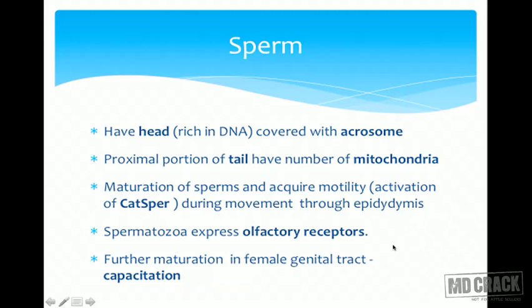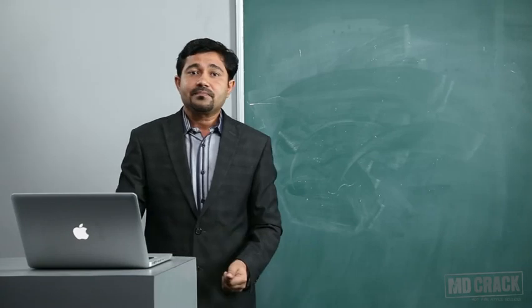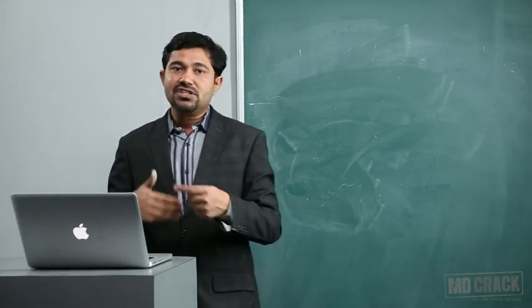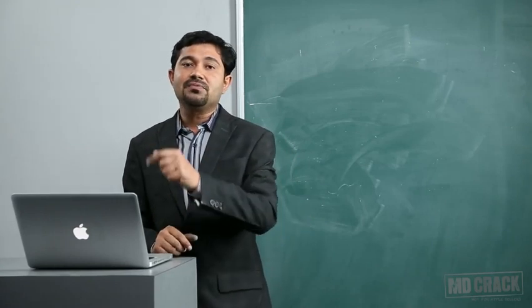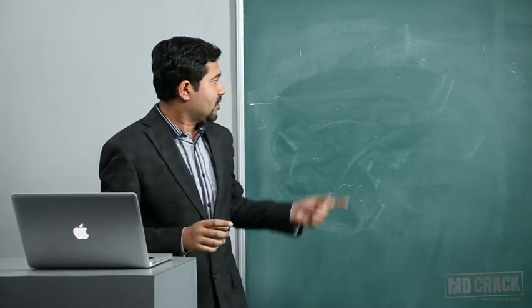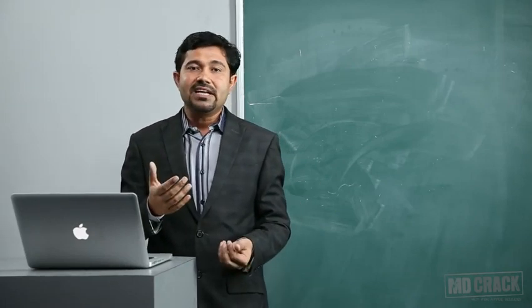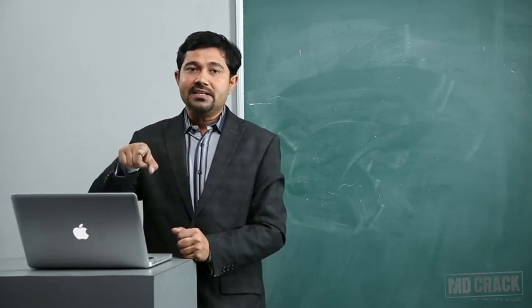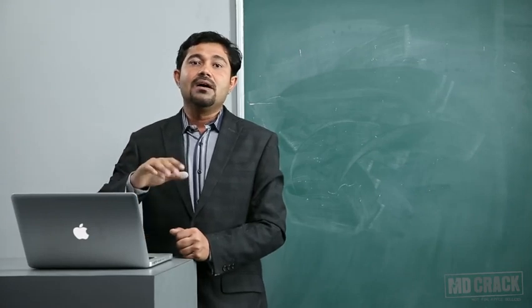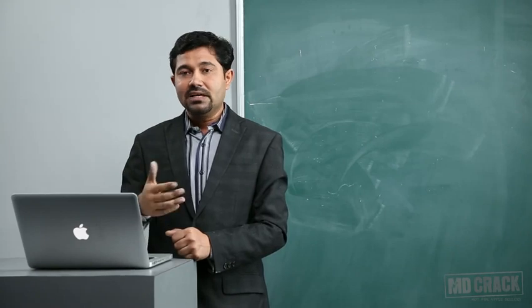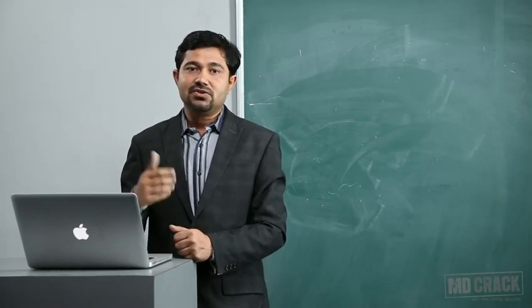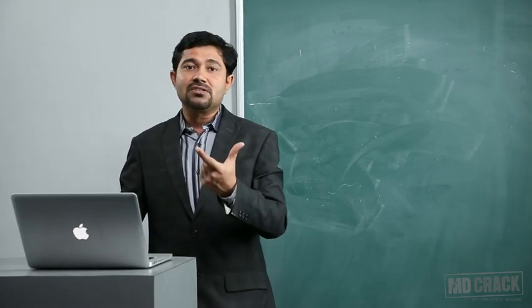Sperms also have olfactory receptors, which are required for movement toward the ovum — the sperm detects chemical substances from the ovum through these olfactory receptors. Sperms achieve motility and maturation not only in the male genital tract but also in the female genital tract. A lot of cholesterol covers the acrosome so the acrosomal reaction does not occur in the male genital tract. When sperm enters the female genital tract, this cholesterol is washed away — the sperm achieves further motility. This process is called capacitation.